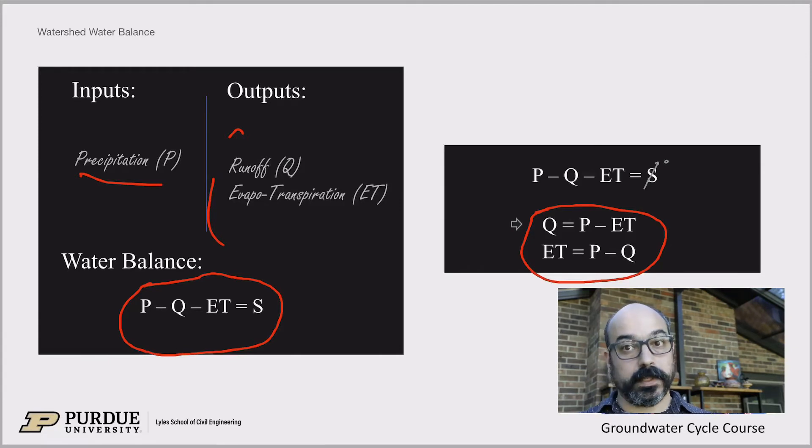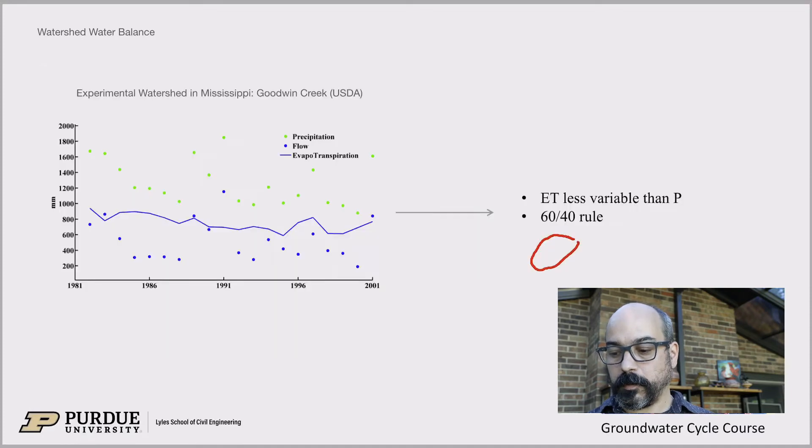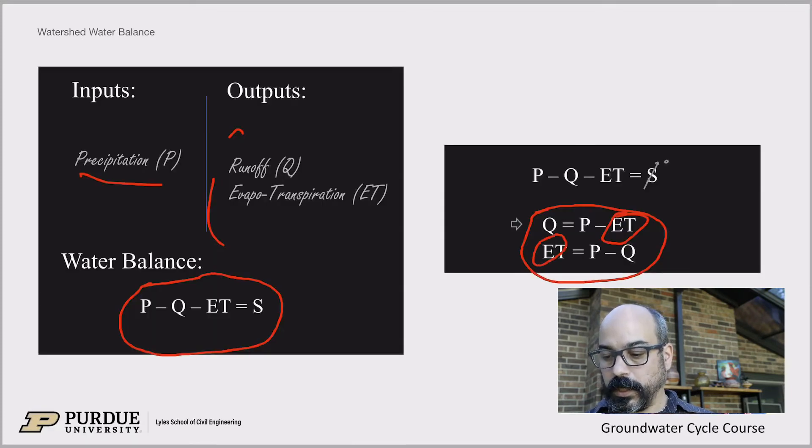So if you change the storage, the groundwater storage, then you have a term on the right hand side. Now, assuming the storage doesn't change year to year, there's no recharge or discharge of groundwater. So the groundwater is stable. Then you have that very simple water balance here on the right, where Q, so the runoff in a river, is equal to whatever fell on land minus the transpiration. So this is quite powerful because typically evapotranspiration is pretty hard to measure, but discharge and precipitation, you have a weather station typically near you, and you have a gauging station near you from the USGS.